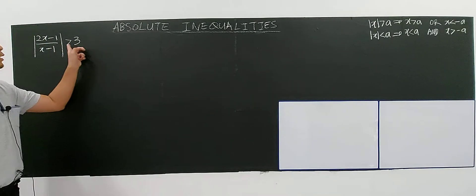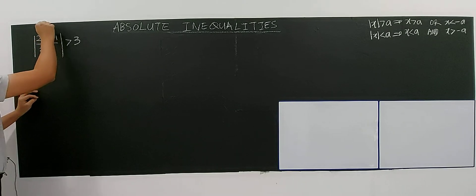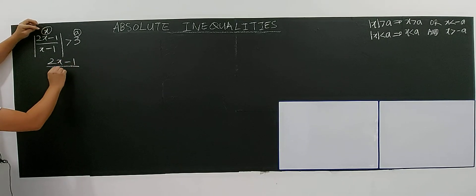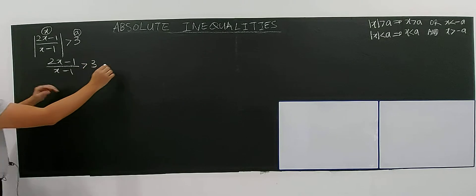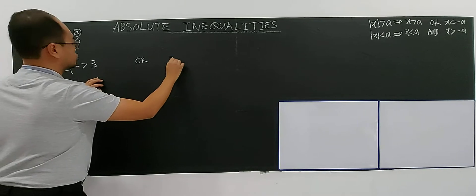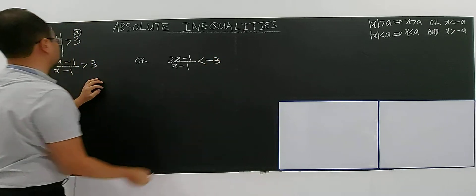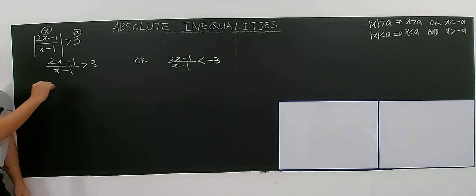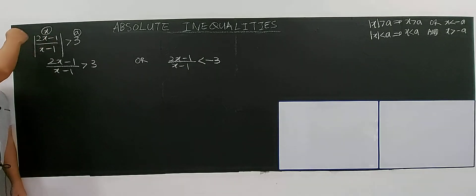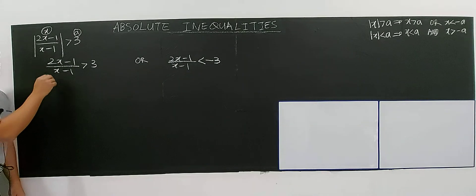Look at this case — it's greater than, so apply the basic definition. This is your x and this is your a, so it gives you: (2x minus 1)/(x minus 1) is greater than 3, or (2x minus 1)/(x minus 1) is less than negative 3. You've learned rational inequalities before; this is just the absolute rational inequality version. Now you break it into two parts — two rational inequalities.